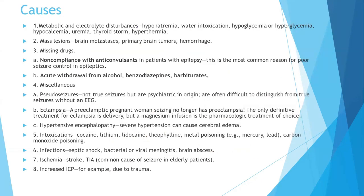There are different causes of seizures. The number one cause is metabolic and electrolyte disturbances: hyponatremia, water intoxication, hyperglycemia or hypoglycemia, hypocalcemia, uremia, thyroid syndrome, or hyperthermia can cause seizures. Brain metastasis, primary brain tumors, or hemorrhage can also cause seizures. Non-compliance with anticonvulsants—when a diagnosed epileptic patient is not taking their medications—is the most common reason for poor seizure control in epilepsy.